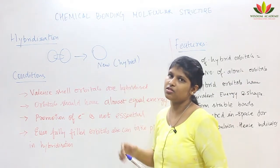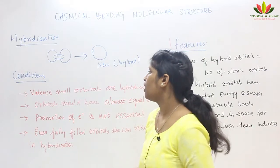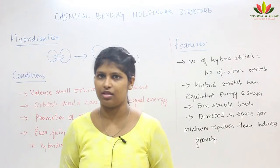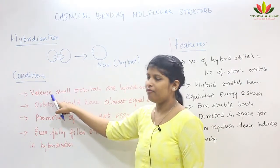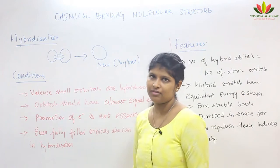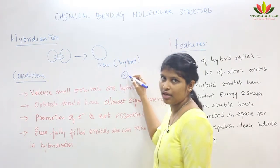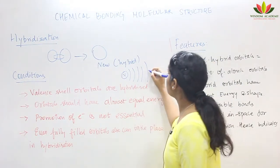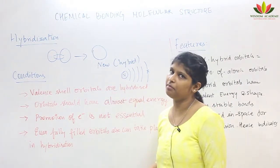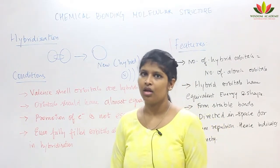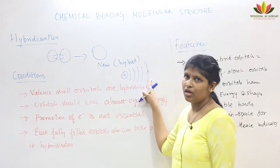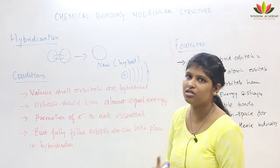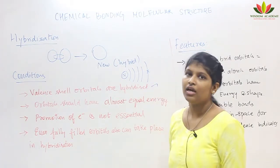This process is called hybridization. Now we will see the conditions — not every atomic orbital will intermix. First condition: only valence shell orbitals are hybridized. The inner shell will not participate in hybridization; only the orbitals in the valence shell will participate.